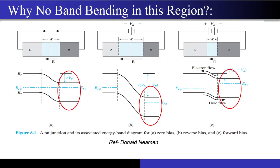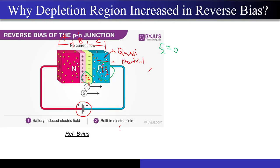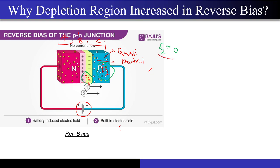There was an internet outage. So, assuming E2 equals zero — if there is no electric field, there is no drift movement in the quasi-neutral regions. Can anyone explain why the depletion region actually increased in the reverse bias case?